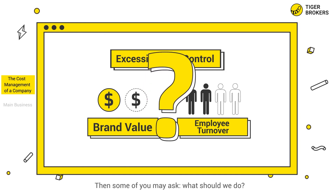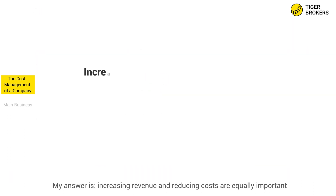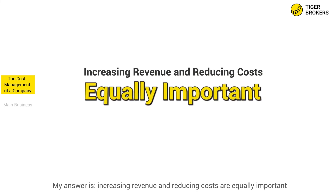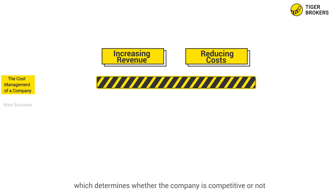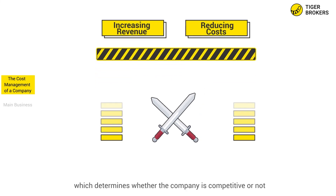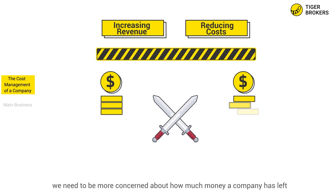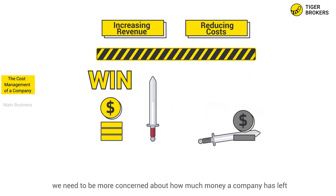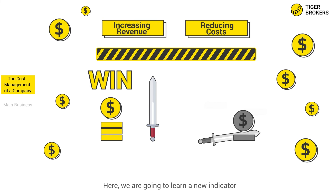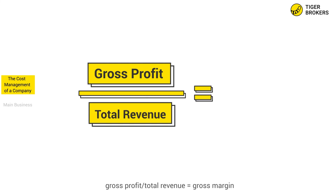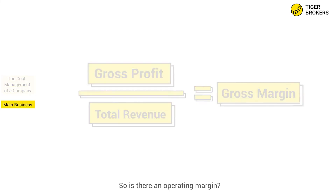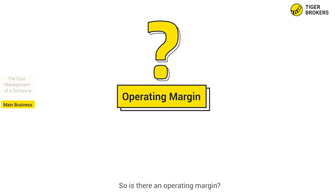Then some of you may ask, what should we do? My answer is: increasing revenue and reducing costs are equally important. Both are designed to increase income, which determines whether the company is competitive or not. In other words, we need to be more concerned about how much money a company has left. We're going to learn a new indicator. As we learned in the previous lesson, gross profit divided by total revenue equals gross margin. So is there an operating margin? Bingo!